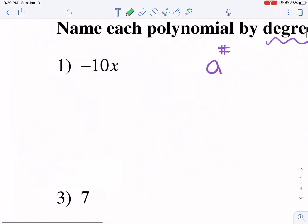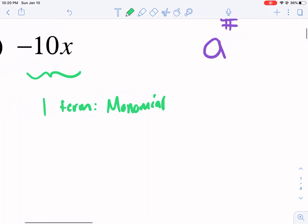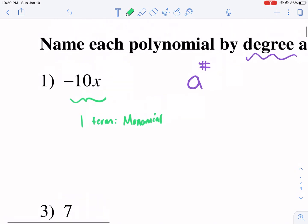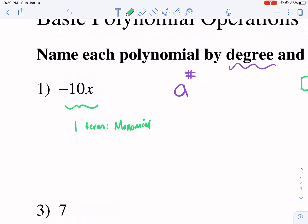Looking at number one, we only have one term. How do I know? I know there's only one term because there's no addition or subtraction symbol. So it's only one term. This is what you call a monomial. Monomial is probably how most people pronounce it, but the phonetical way is mono meal. Monomial, one term.